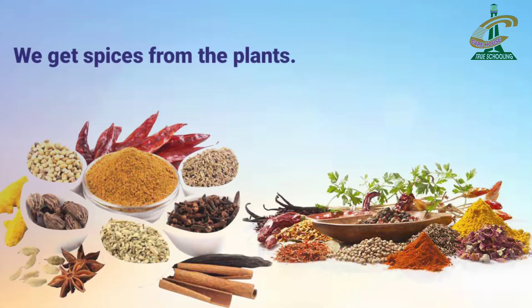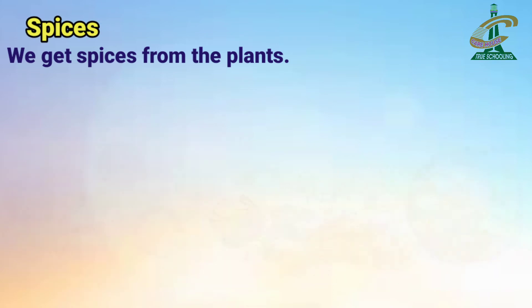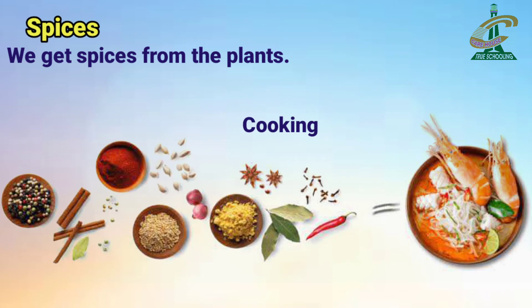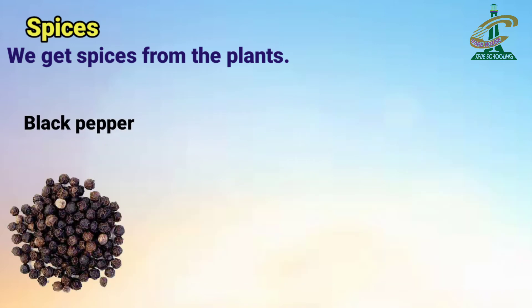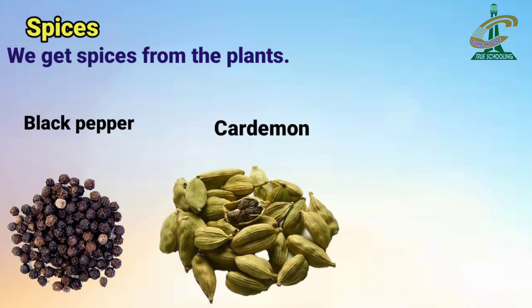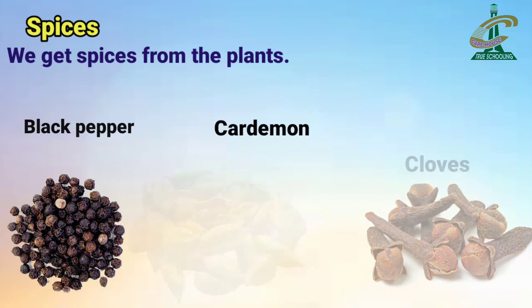We get spices from plants. جو ہمارے مسالے ہوتے ہیں وہ بھی ہمیں plants سے ملتے ہیں، جو کہ ہم cooking میں use کرتے ہیں. Like black pepper (کالی مرچ), cardamom (الائچی), cloves, red chilies — and all such spices. We get spices from plants.